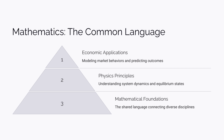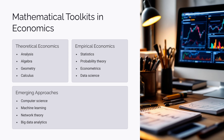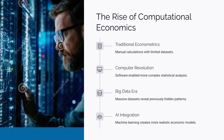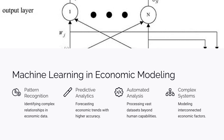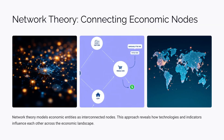Econometrics also requires strong mathematical skills, but in a different way. While theoretical economics relies on fields like analysis, algebra, geometry, and calculus, empirical economics leans more on statistics. Recently, computer science has become increasingly important because data is central to economics. With advancements in computer technology, big data is now widely used. Machine learning is also being applied, leading to more realistic empirical economic models. Network theory is another popular approach, where technologies or economic indicators are modelled as nodes in a network to study their connections.